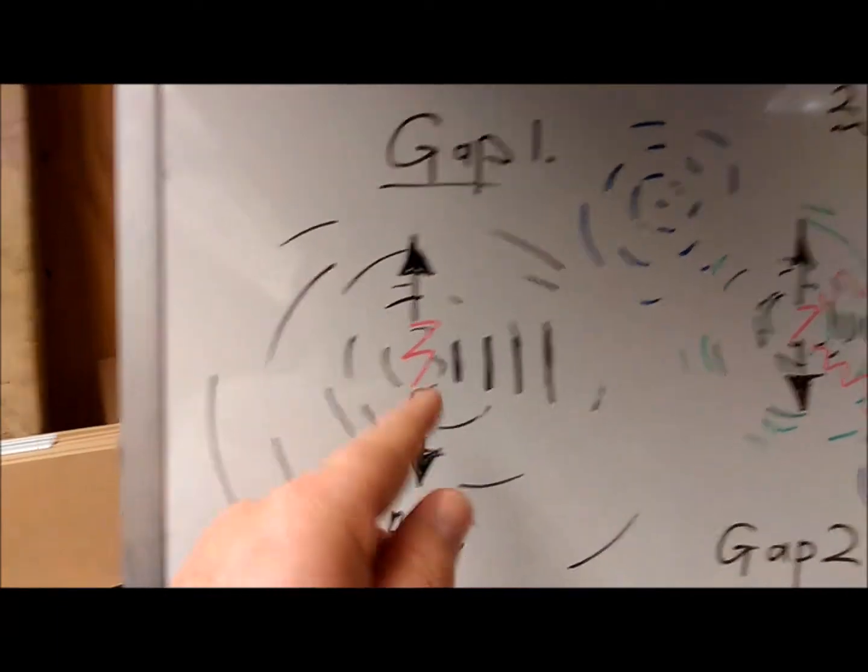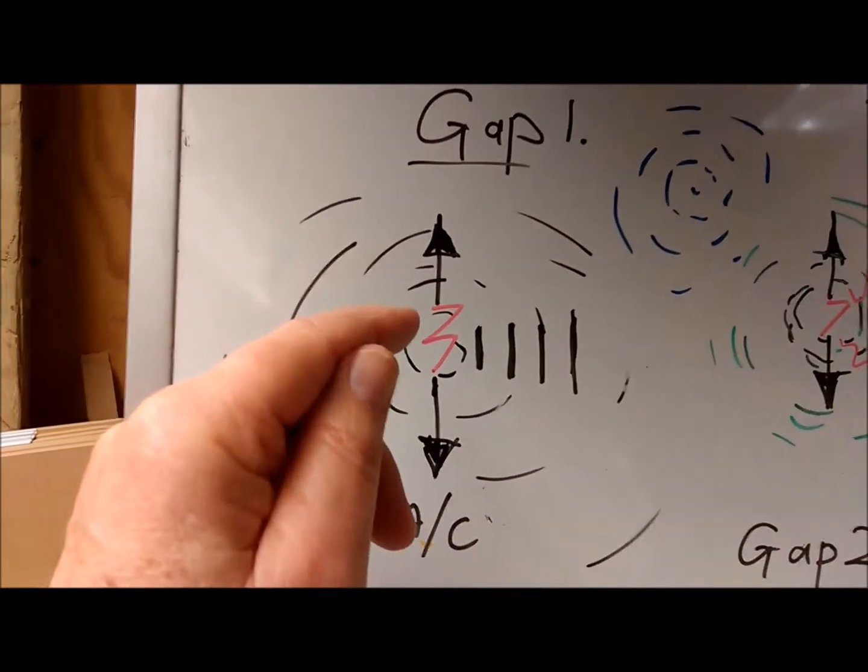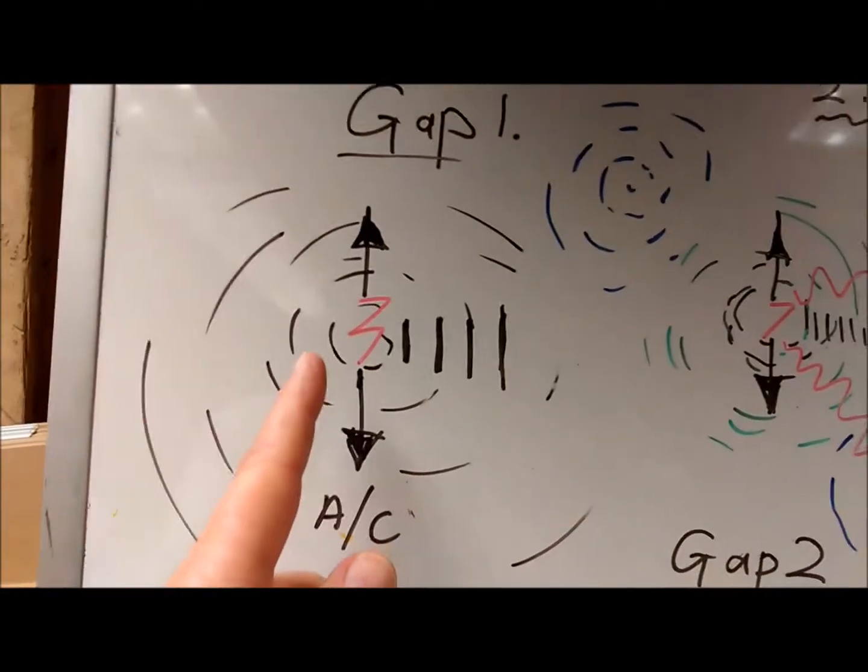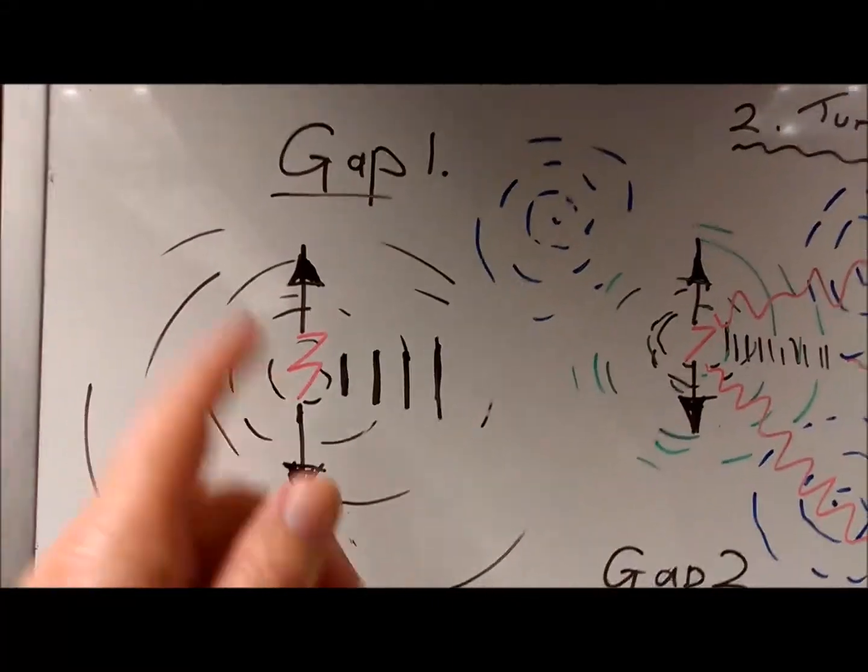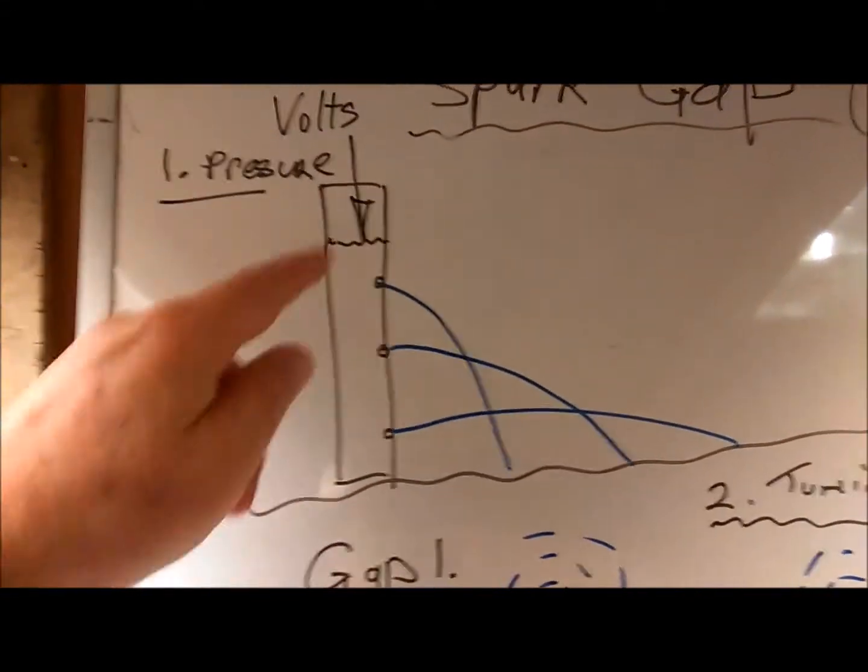This spark gap can be pulsed in AC or DC, so it can either be Hertzian or it can be a flash like lightning.